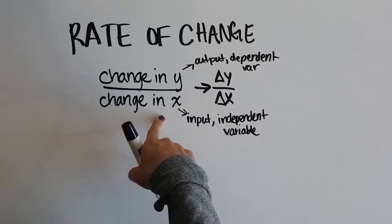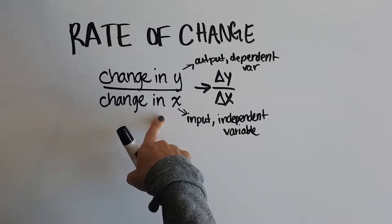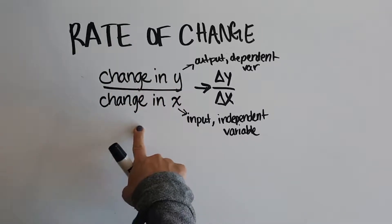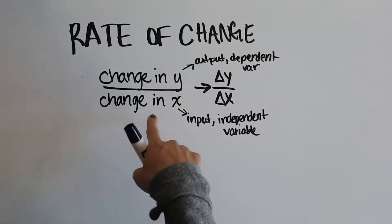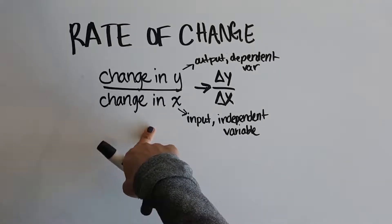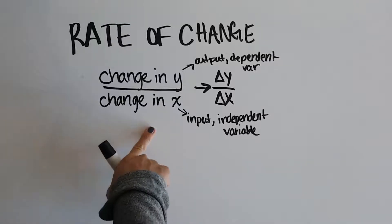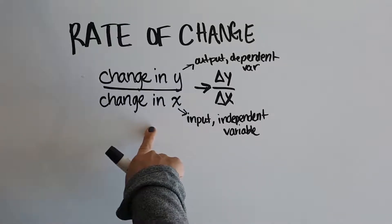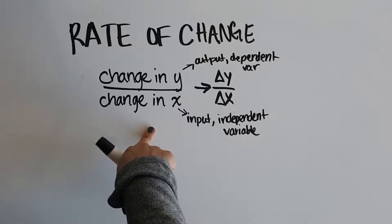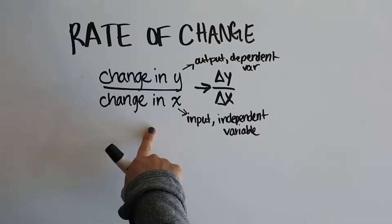In this video, we want to figure out how to find the rate of change when you're given a table, when you're given a graph, or when you're given a situation. Let's look at a situation first, just because it seems more intuitive.